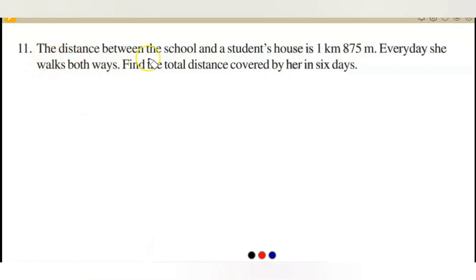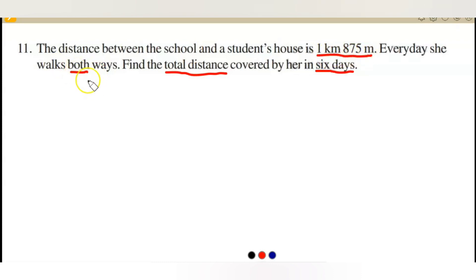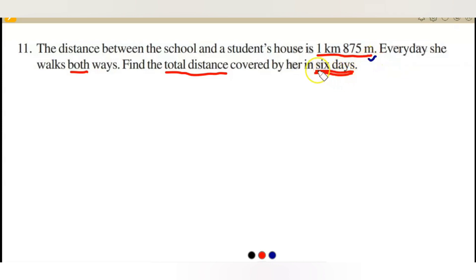Let's go to question 11. The distance between the school and the student's house is 1 kilometer 875 meters. Every day she walks both ways. Find the total distance covered by her in 6 days. One way is 1 km 875 m; she goes and comes back, so we double it to get the daily distance, then multiply by 6.